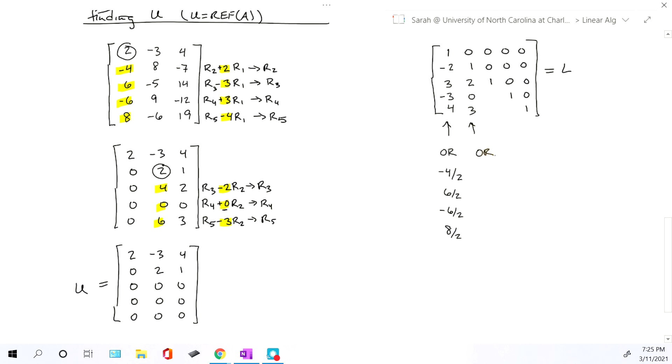Or if you did it the other method, we originally had 4, 0, 6 below our pivot, and you divide each of those by the actual pivot value. And notice that's where you get once you simplify 2, 0, 3, the same numbers we just plugged in.